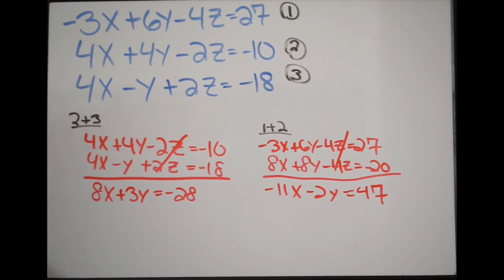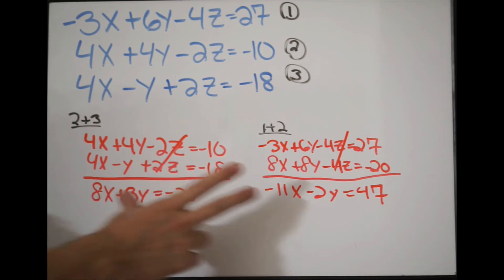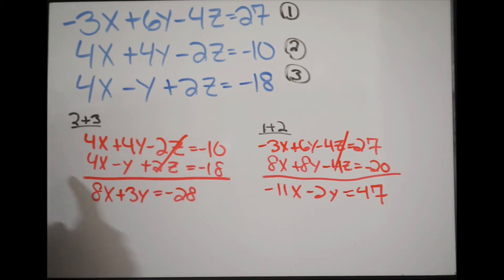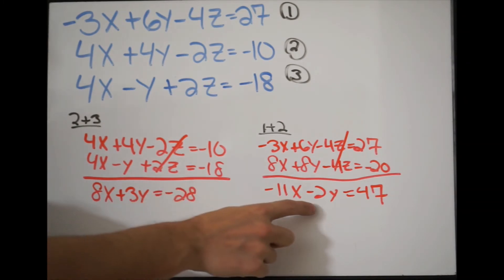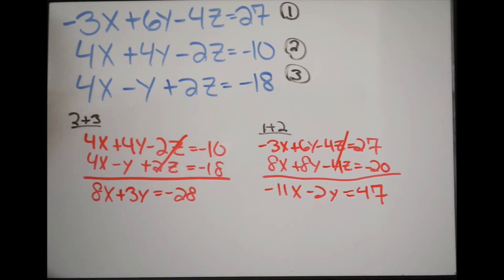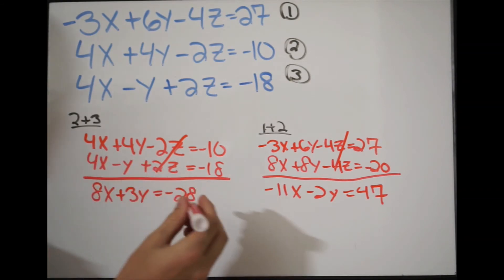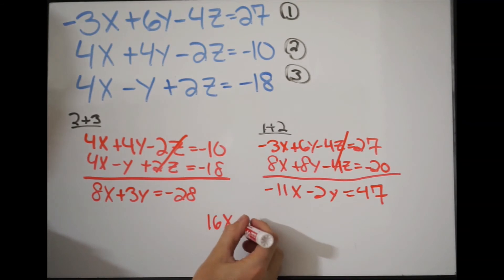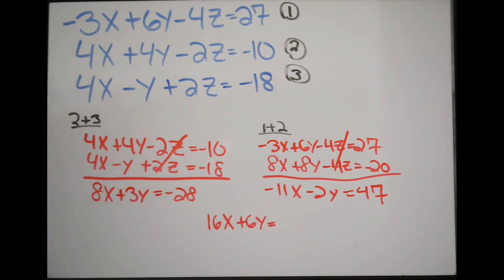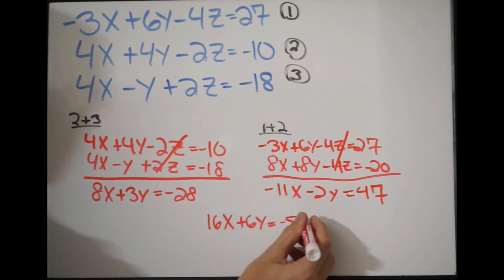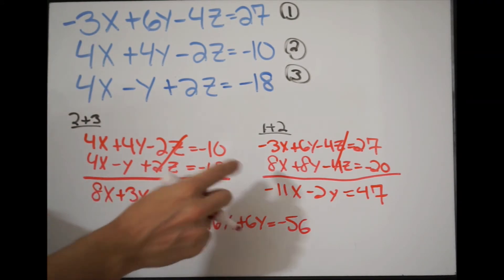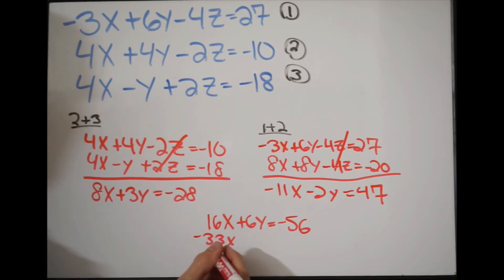Now we have it down to a 2x2 system — that's what we want. We use elimination one more time to eliminate one more variable. Looking at both equations, I'll multiply the first equation by 2 to get 6y, and the second by 3 to get negative 6y — so if I add, the y's will cancel. Multiplying the first by 2: 16x plus 6y equals negative 56. Multiplying the second by 3: negative 33x minus 6y equals 141.